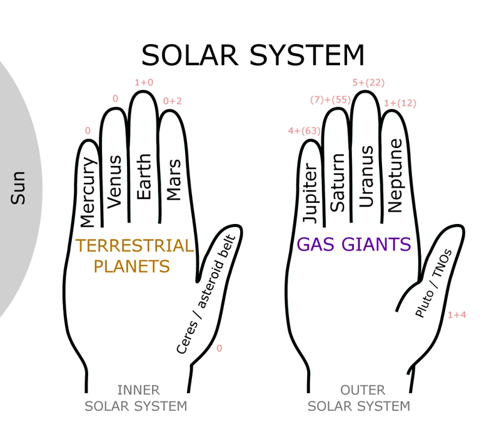One particular nine-planet mnemonic, "my very easy memory jingle seems useful naming planets," was easily changed once the demotion occurred, becoming the eight-planet mnemonic, "my very easy memory jingle seems useless now." Slightly risqué versions include, "Mary's virgin explanation made Joseph suspect upstairs neighbor," and perhaps simplest of all, "my very easy method, just son."